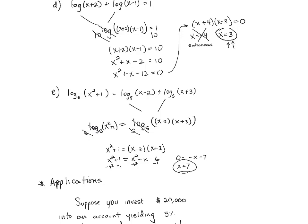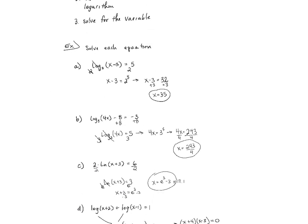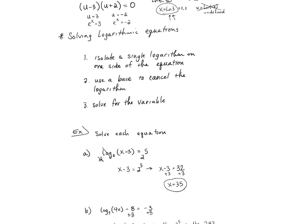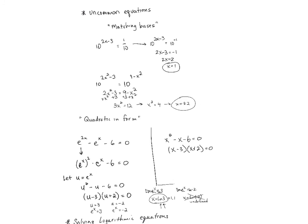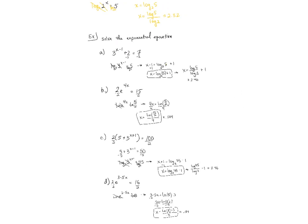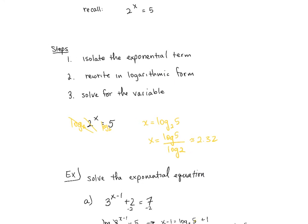That covers lesson 4.5, solving exponential and logarithmic equations. For logarithmic equations: isolate the logarithm, use a base on either side to cancel it, then solve for the variable. For exponential equations: isolate the exponential term, use a logarithm on both sides to cancel the base, then solve for the variable. Special cases include matching bases and equations quadratic in form.